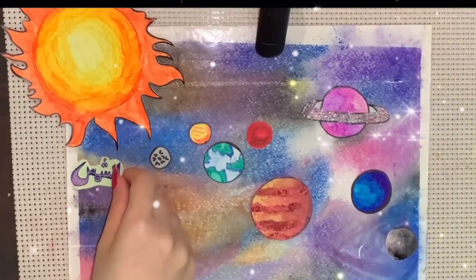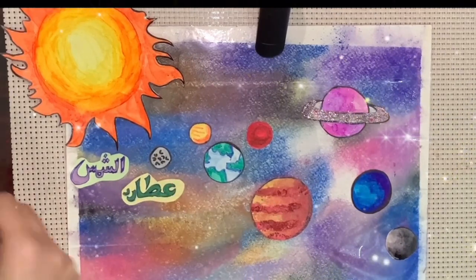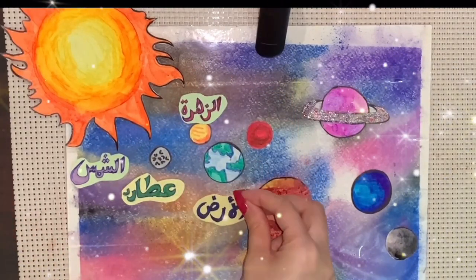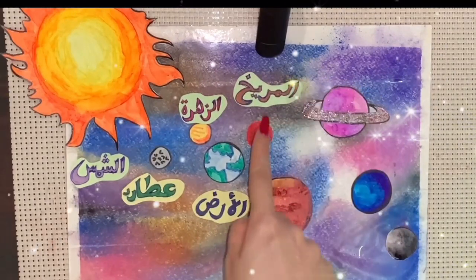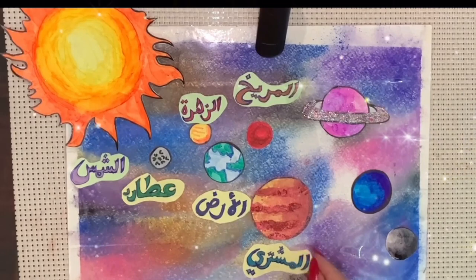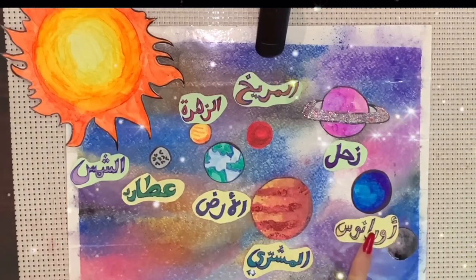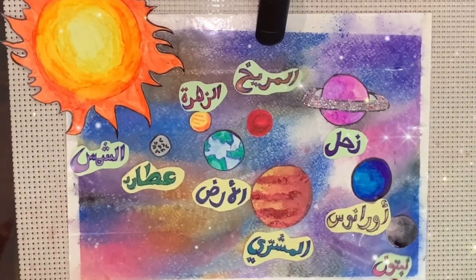Now let's label them in Arabic: Sun is 'Shams', Mercury is 'Utarid', Venus is 'Az-Zahra', Earth is 'Aard', Mars is 'Al-Marreekh', Jupiter is 'Al-Mushtari', Saturn is 'Zuhal', Uranus is 'Uranus', Neptune is 'Neptune'. That's our solar system!